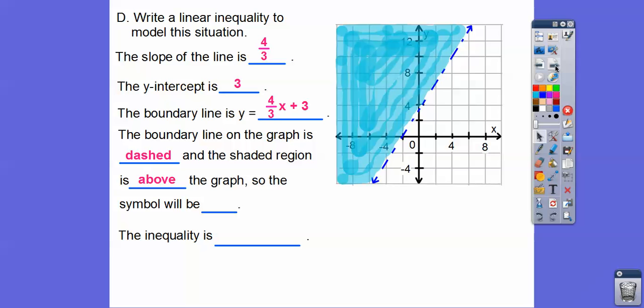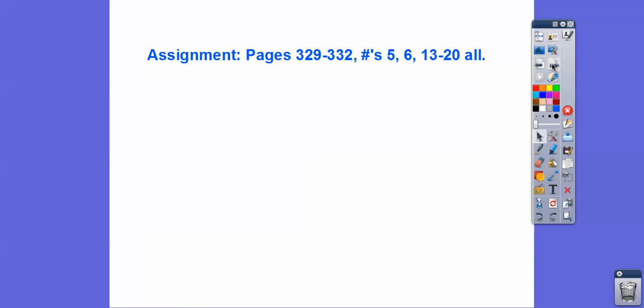So the graphs and the symbol is going to be greater than because it's above. Greater than usually means shade above. So the inequality is going to be y > this stuff right there. All right, you guys, if you are in my class, I would sign that for your homework.